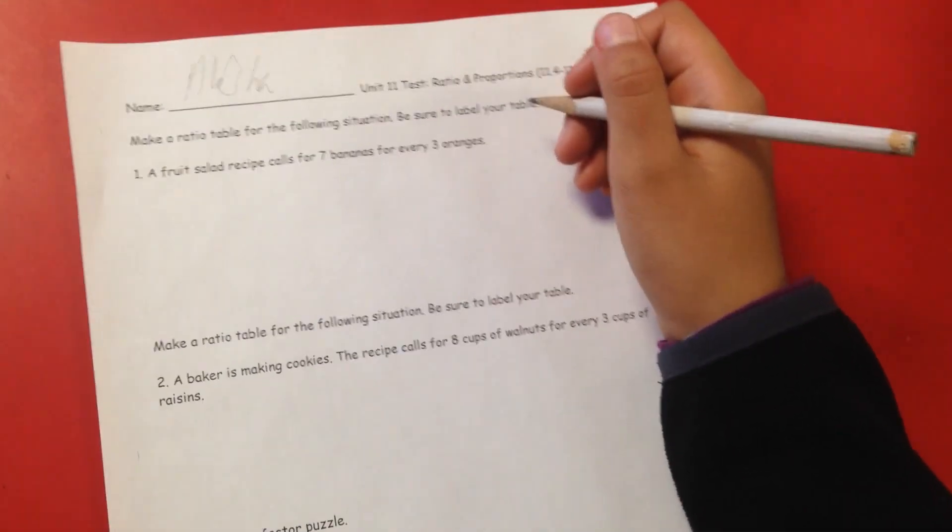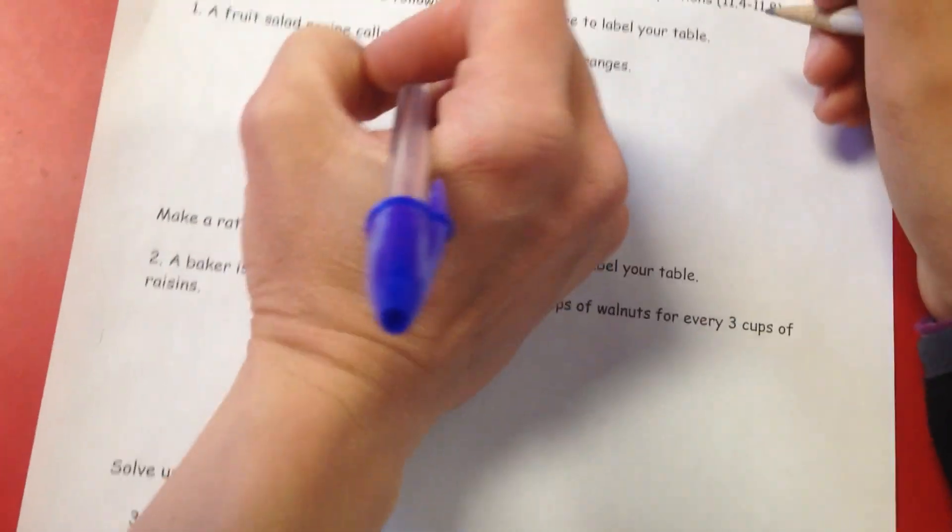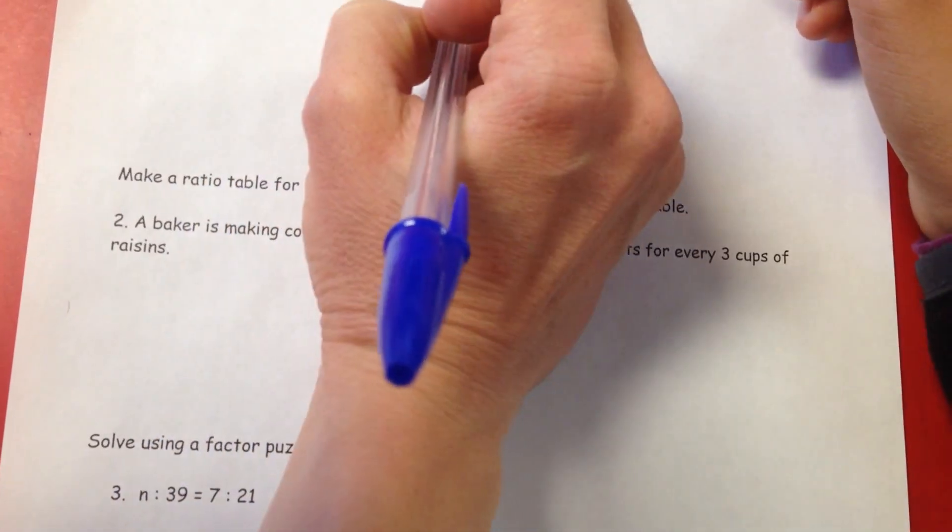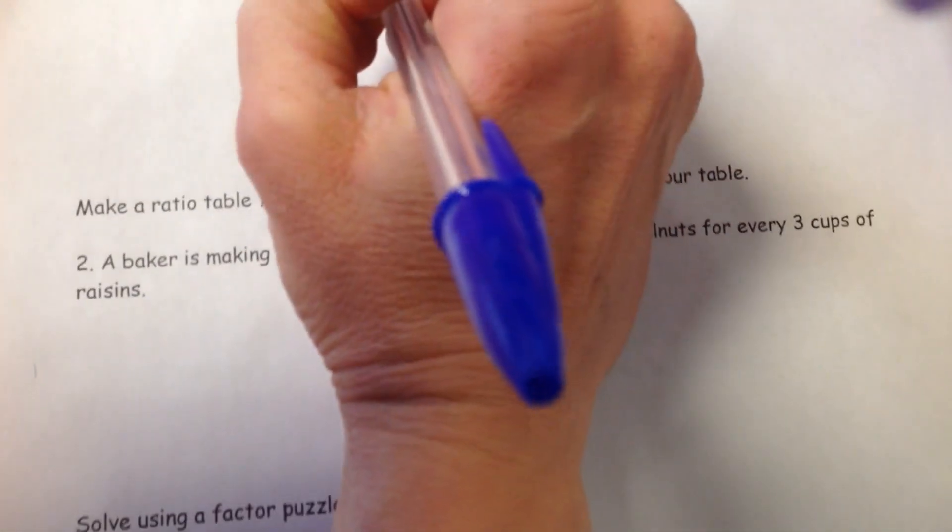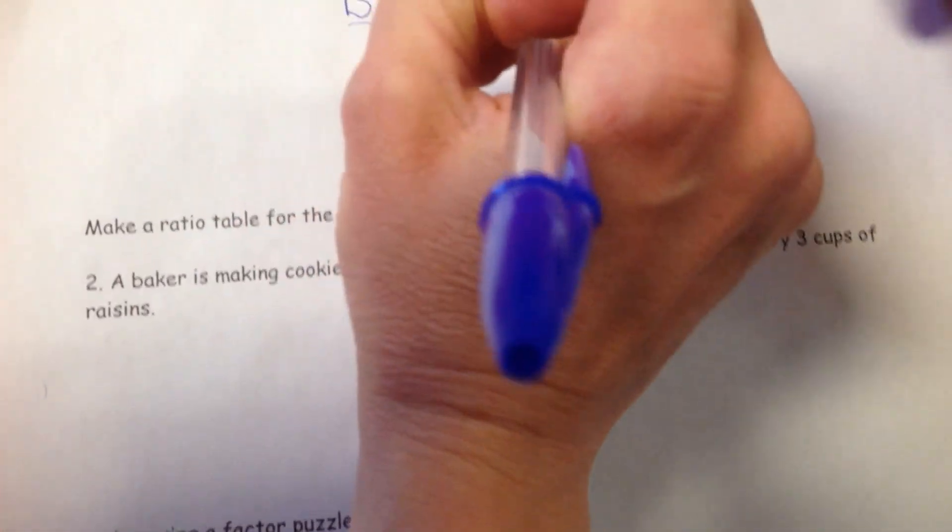So what you're going to need to do is create your ratio table. It would look like this. You're going to put bananas here and oranges here. And it's seven bananas and three oranges that you start with.